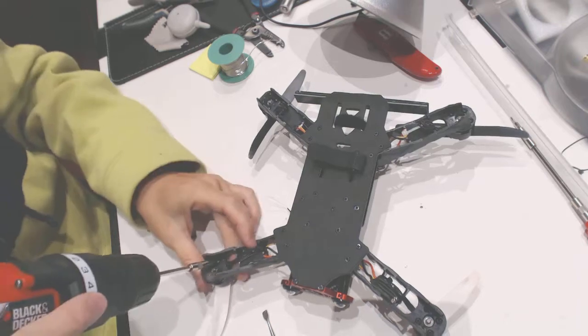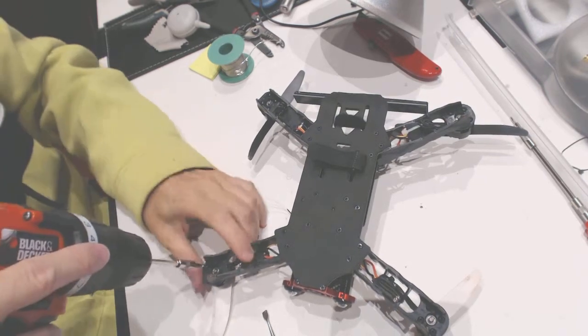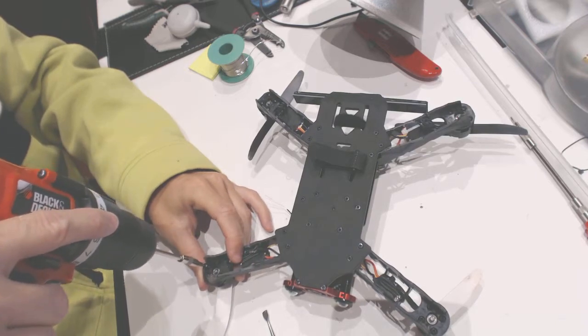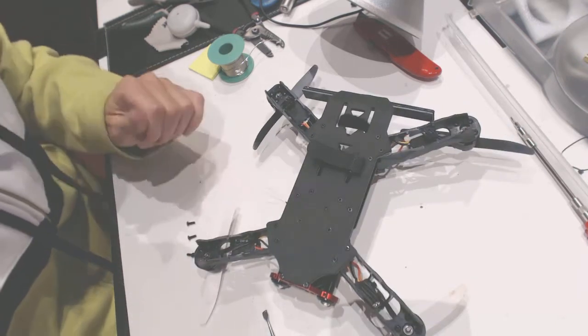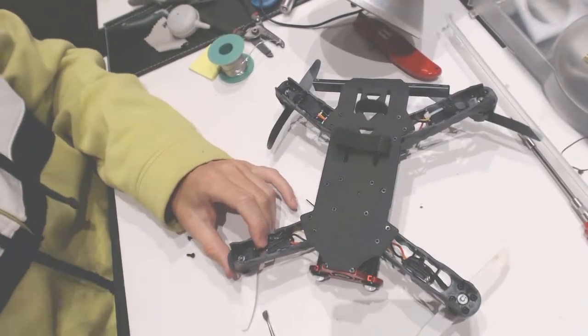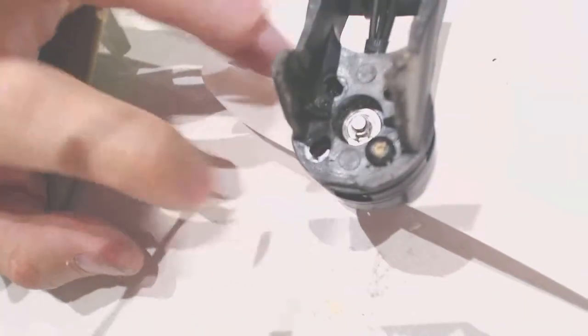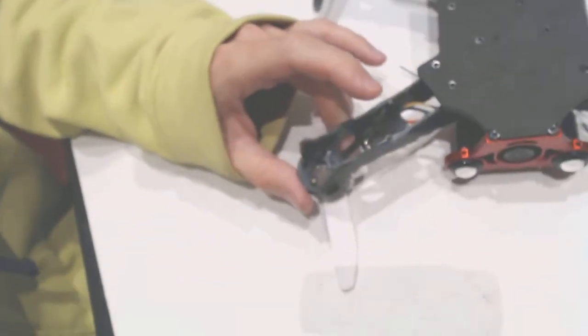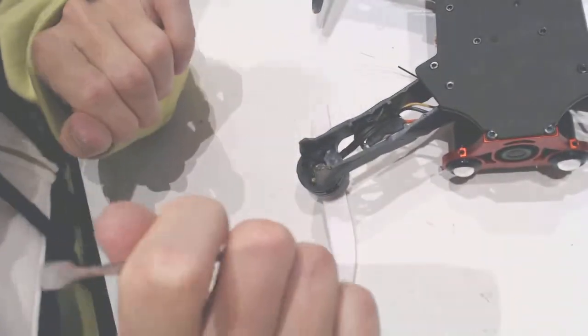So there are basically four screws that hold the engine down. And some of you should be able to see it. There is a pin. There is a pin right there that basically... There is a pin right there that holds the shaft down. So maybe it's a good idea to disconnect this pin while the engine is mounted to the frame.